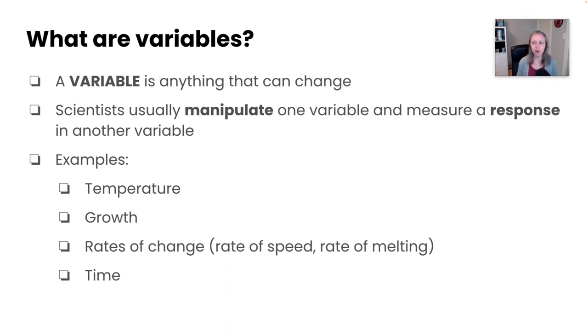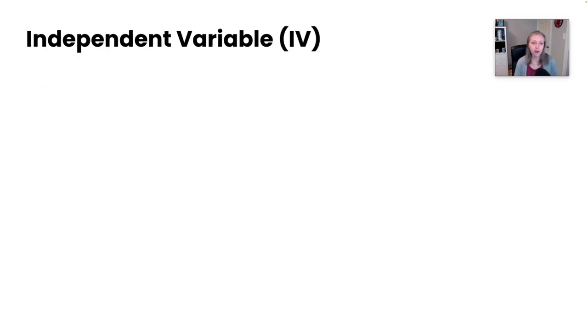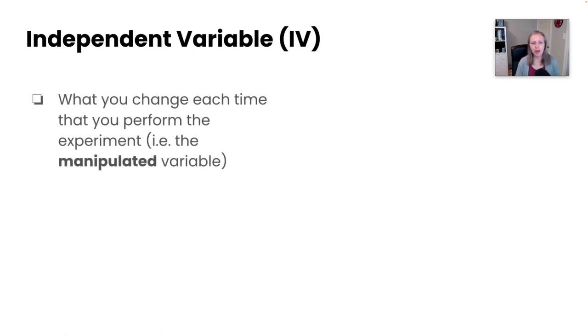Now, we actually have some very specific types of variables that we need to take a look at. The first one is the independent variable. This is the one that when you're doing an experiment, this is what you are changing each time you perform the experiment. So this is the variable that is manipulated. There's only ever one in an experiment, and that's because we need to control what we are manipulating in order to know what sort of effect it's going to have overall.